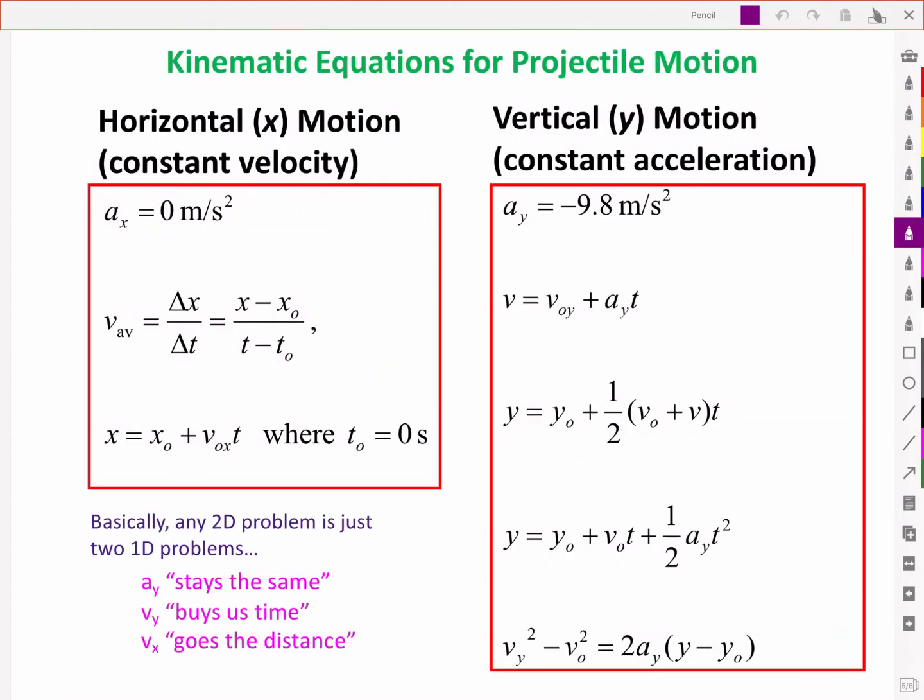And so we independently apply the appropriate kinematic equations here for each component. For horizontal, for constant horizontal velocity, the acceleration is zero and the velocity is constant. For the constant vertical acceleration, acceleration is constant and we have these familiar equations.